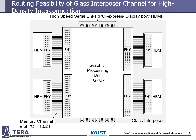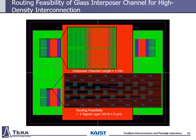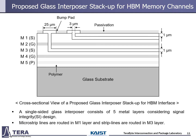To design the channels of glass interposers for next-generation HBMs, we first check the routing feasibility. The routing result shows that the interposer channel range is about 5 mm to interconnect between GPU and HBM. Considering routing feasibility, the sum of the channel width and space should be less than 6 µm using two signal layers. The proposed glass interposer stack-up for HBM memory channels consists of 5 metal layers. Microstrip lines are routed in the M1 layer and striplines are routed in the M3 layer.